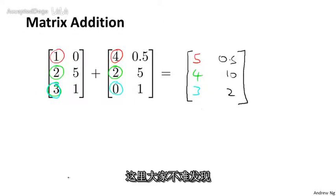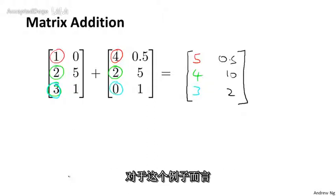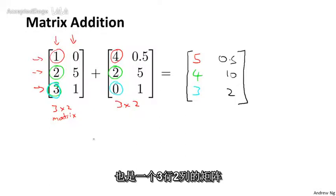It turns out you can add only two matrices that are of the same dimension. So this example is a 3 by 2 matrix because this has 3 rows and 2 columns. This is also a 3 by 2 matrix and the result of adding these two matrices is a 3 by 2 matrix again.